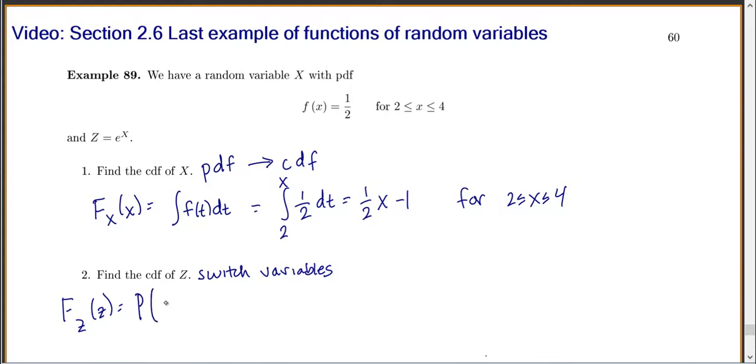Or by definition, the CDF is the probability that Z is less than or equal to some little specific number z. Now look up above, what do we know? We know that capital Z is equal to e to the capital X, so let's switch that.